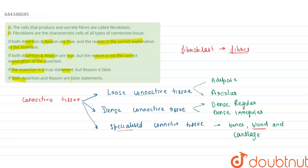The first statement — that the cells that produce and secrete fibers are called fibroblasts — is a true statement. The reason — that fibroblasts are the characteristic cells of all types of connective tissue — is a false statement, because in blood these fibers are absent, and that is why blood is present in liquid form. So our correct option is option three: assertion is a true statement but reason is false.